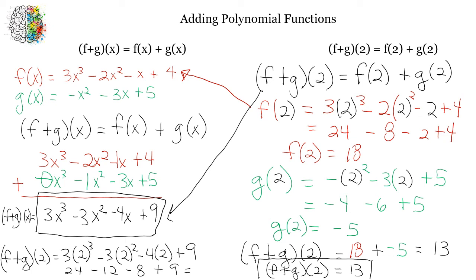So that gives me 24 minus 12, minus 8, plus 9, and that also equals 13. So that gives you two different ways to solve it if they give you a number.